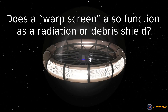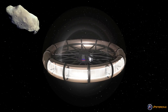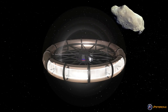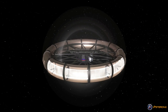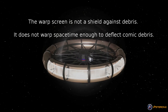Does a warp screen also function as a radiation or debris shield? A certain number of folks think that the warp bubble can serve as a shield against debris, since it warps space-time. No — a warp screen only shields, negates against, or screens away time dilation and mass. It does not warp space-time enough to deflect cosmic debris.